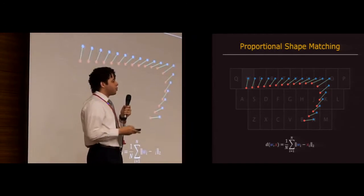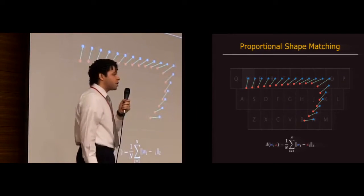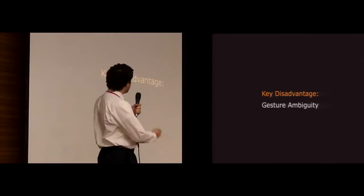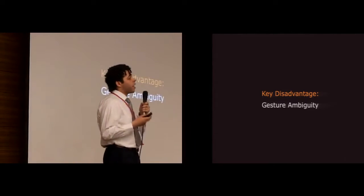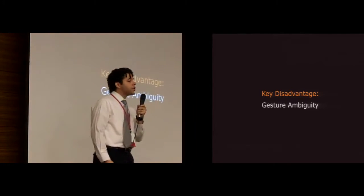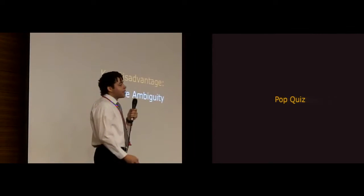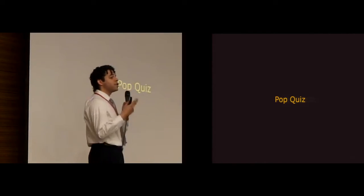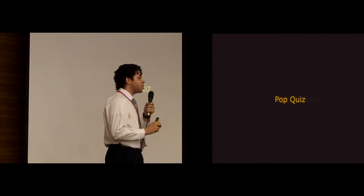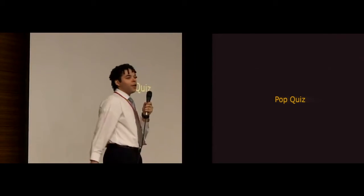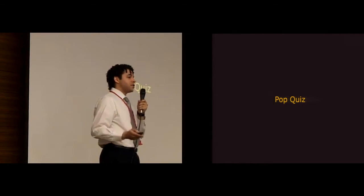Otherwise, you'll fall victim to perhaps the key disadvantage to gesture typing over touch typing, which is gesture ambiguity. Word gestures themselves are inherently ambiguous, and to show you exactly what I mean by that, it's time for a pop quiz. So I'm going to show you two different words, and your job is to tell me if those words have the same gesture, which is really bad, or if they have different gestures.